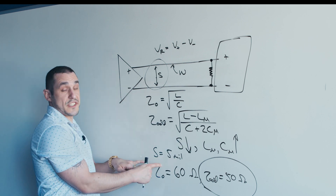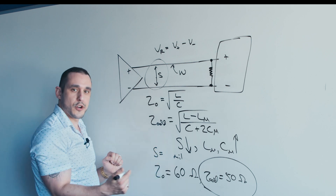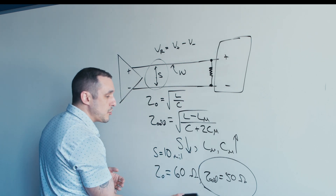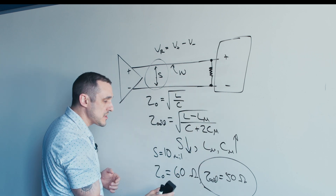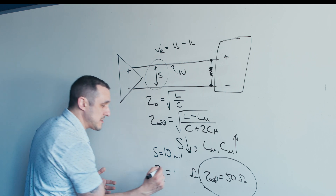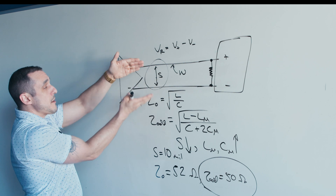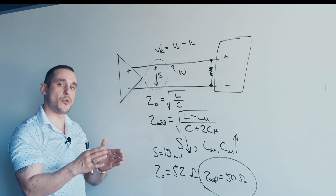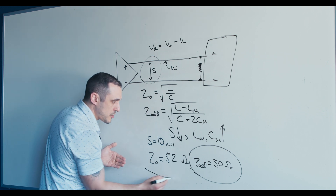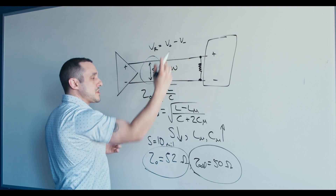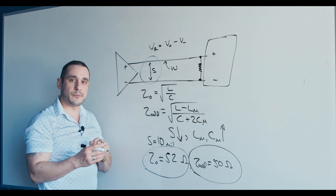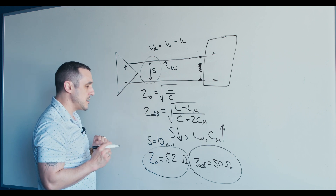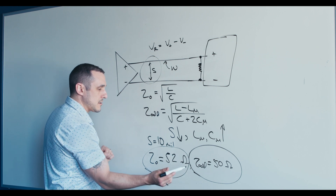Now suppose instead of using the default spacing in Altium Designer, we make the spacing quite a bit larger — say 10 mils. We may find that to achieve an odd mode impedance of 50 ohms, the characteristic impedance of the trace only comes out to something like 52 ohms. So if you start to separate the traces, you get a much smaller deviation between the characteristic impedance and the odd mode impedance — they become much more similar. If you then used the characteristic impedance to determine the impedance matching requirement, you'd still be overestimating slightly, but by a much smaller amount, giving a smaller error. This is one of the key reasons why spacing between the differential pair traces is so important: it determines the deviation between the characteristic impedance and the odd mode impedance.